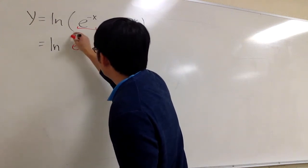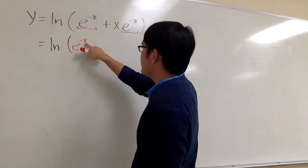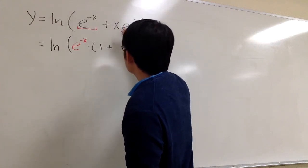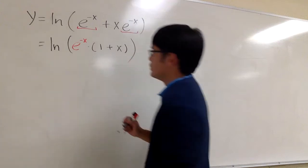Let me write it down right here. So e to the negative x, I will multiply this with, I will have one left, and then I will add the x right here, just like that.